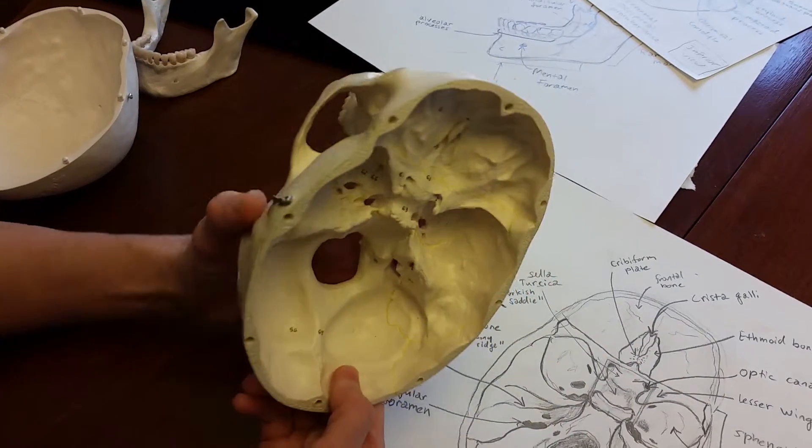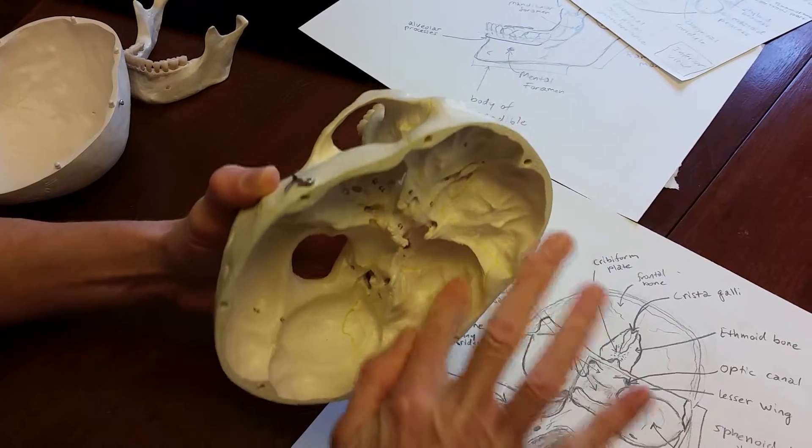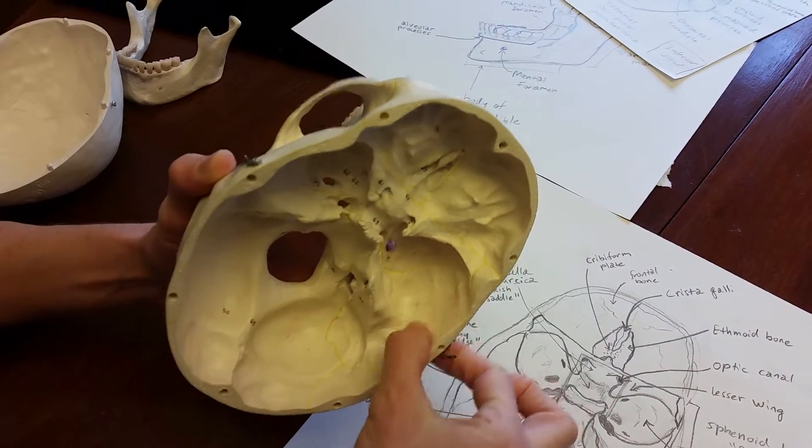Another feature of the temporal bone we mentioned before was the squamous part. You can see that on the inside. It's the thin part.